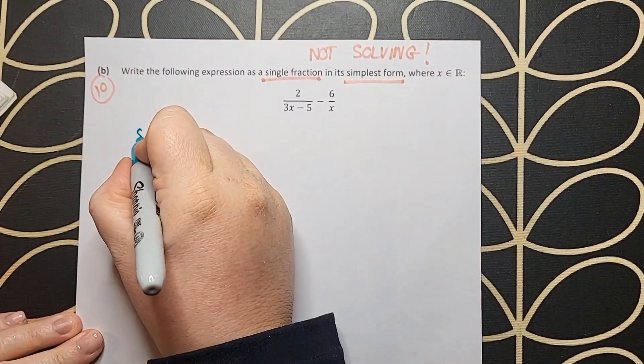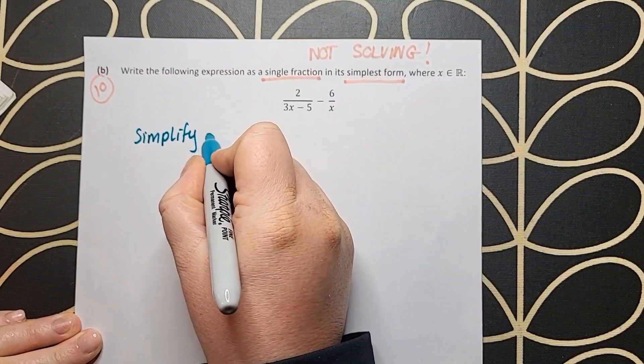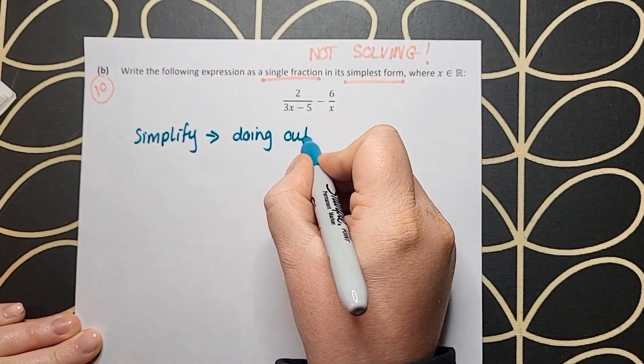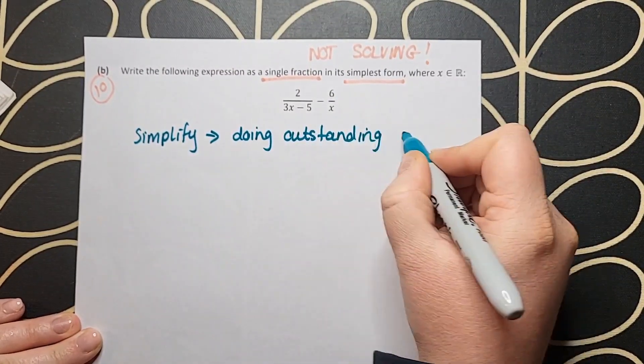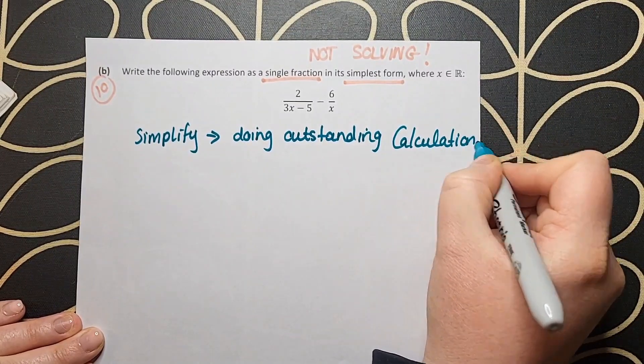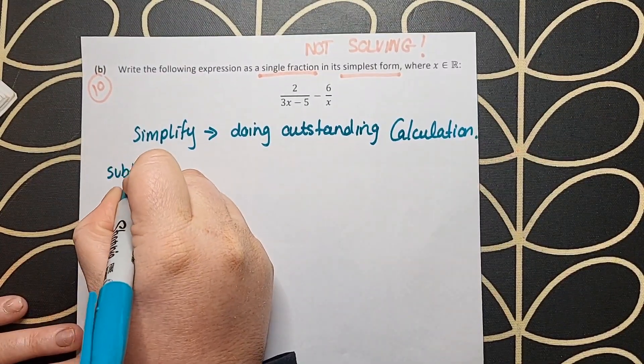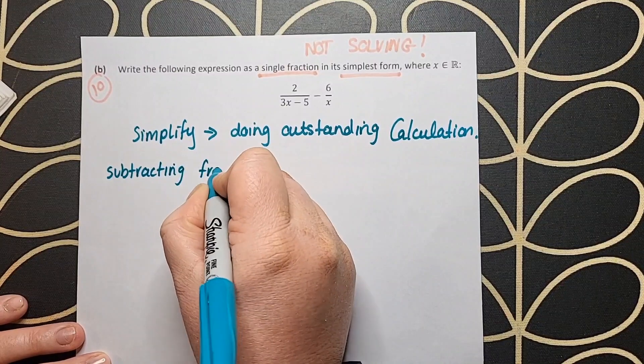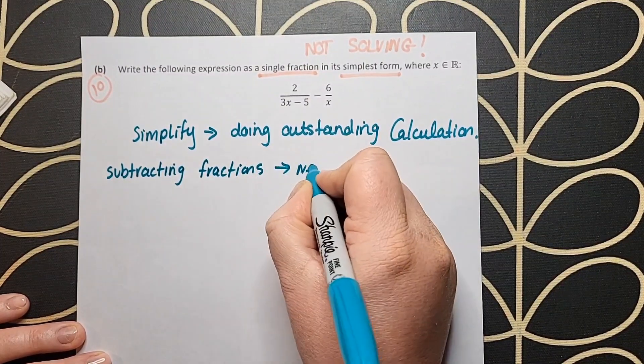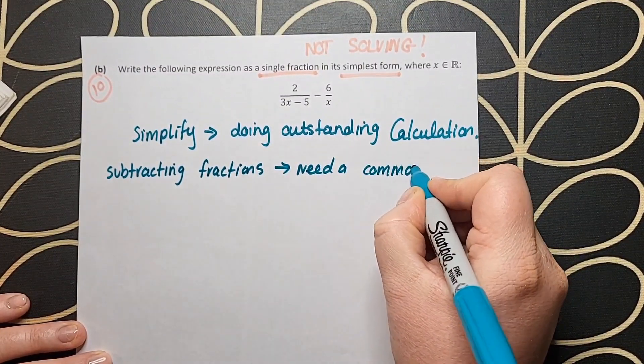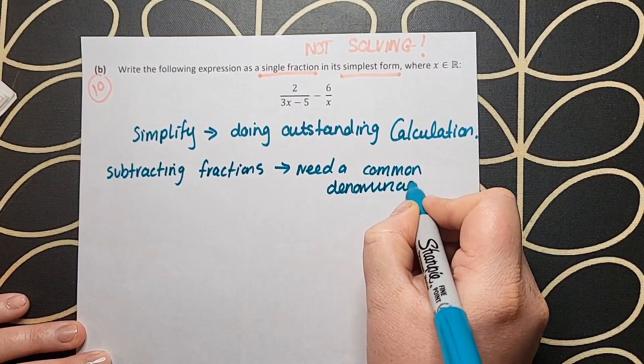Now on to the last part. Part b here is an algebraic absolute staple. They're asking you to write the following expression as a single fraction in its simplest form. We are absolutely not solving here. We are not looking for the value of x. We are simplifying, which in this case just means doing the outstanding calculation, which is subtraction.